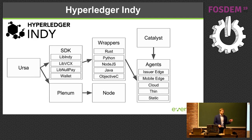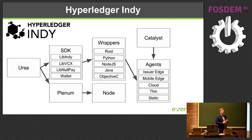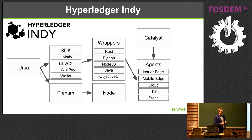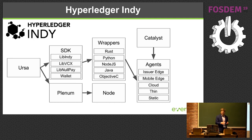Catalyst is a very interesting use case — it allows you to bootstrap your ecosystem. It's currently used by the government in British Columbia, Canada. They use Catalyst to create and hold credentials for all the organizations in the province who have business licenses. This has been live for a couple of months. Most of these organizations don't know anything about self-sovereign identity or verifiable credentials, but they all have a credential owned by the org book — an instance of Catalyst. When the time comes that they want to control their own identity and take it away from the government's stewardship, they can claim that credential and bring it into their personal agent.